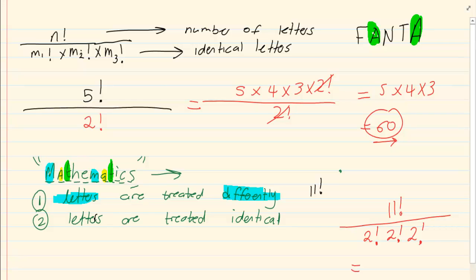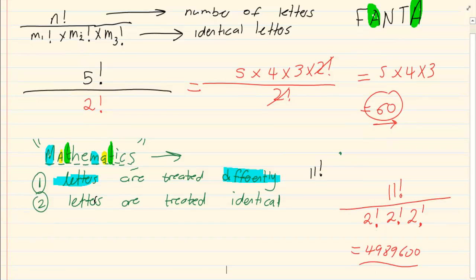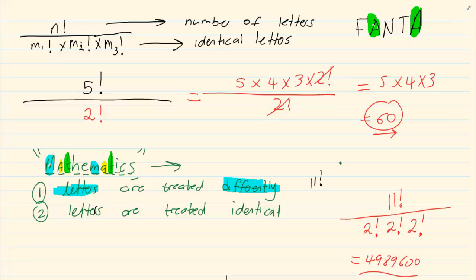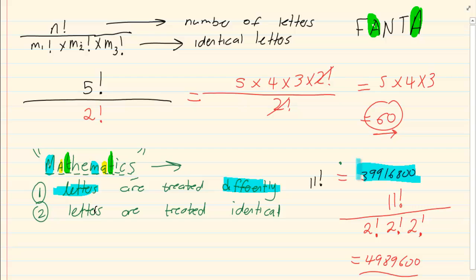So the total number of options when letters are treated identically is 4,989,600. But if you had no adjustments and said all letters are treated differently, you would get 39,916,800. Can you see how big the difference is? Even with FANTA, one option was 60 and the other was 120 — it was double.